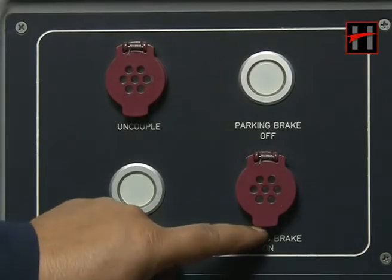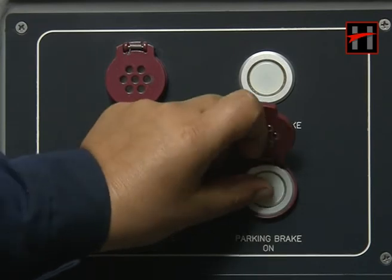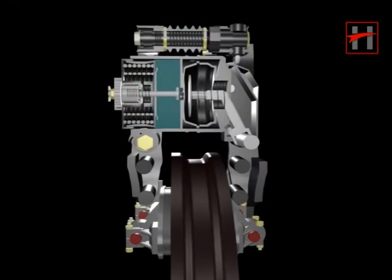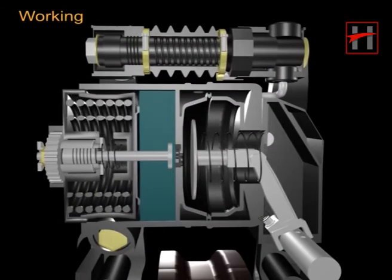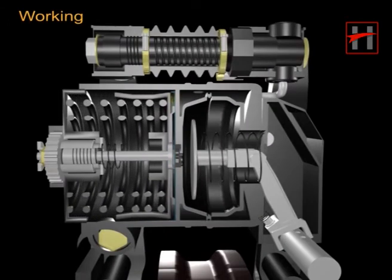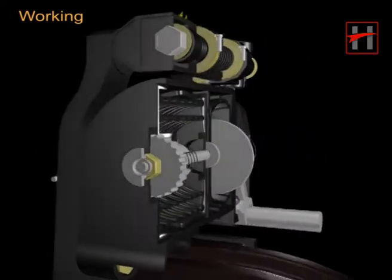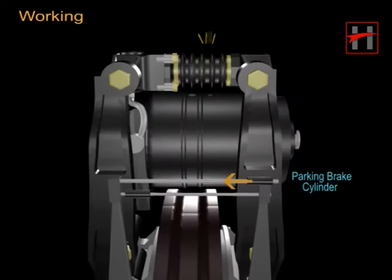When the driver pushes the parking brake apply push button, pressure inside the parking brake cylinder is vented out to the atmosphere via the parking brake magnet valve.